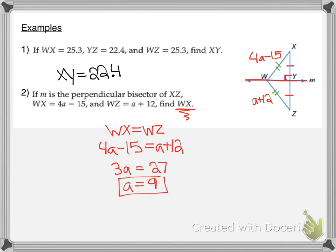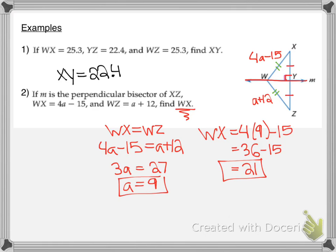The question did not ask for A — it asked for WX. So WX equals 4 times 9 minus 15, which is 36 minus 15, which equals 21. If we plug that in for WZ, we find it is also 21. Those segments are congruent.